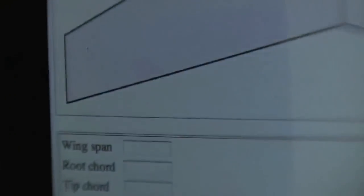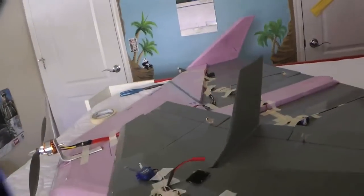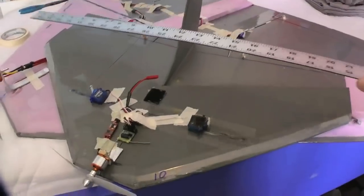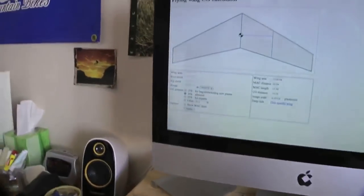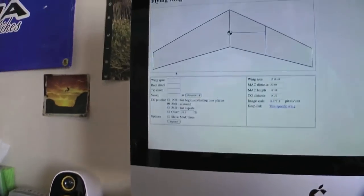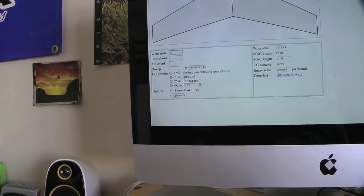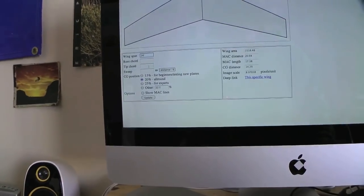First thing it says, the first thing it wants is the wingspan. And in this case, we're going to do this for this little tiny delta one right here. The wingspan is 24 inches. So over here, where it says wingspan, we're going to put in 24 inches.